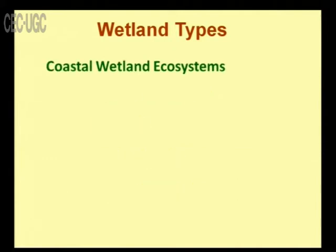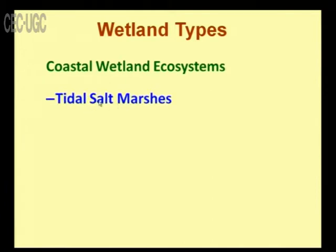The next category is the coastal wetland ecosystem, comprising tidal salt marshes. Tides are created because of gravitational differences between the earth and moon — at one time sea water comes into the mainland, and at another time that water goes back to the sea. These areas are called tidal salt marshes.